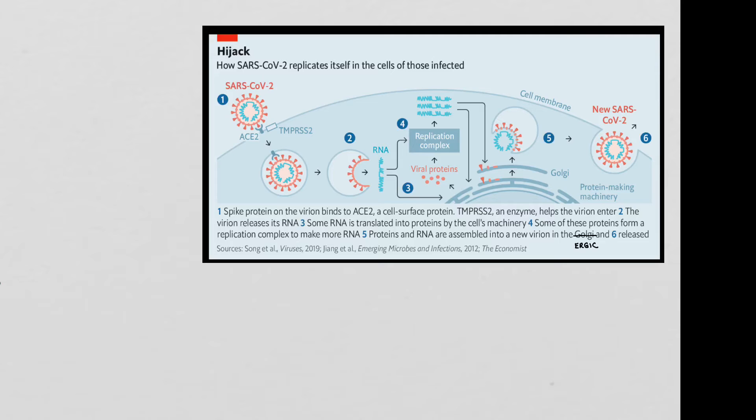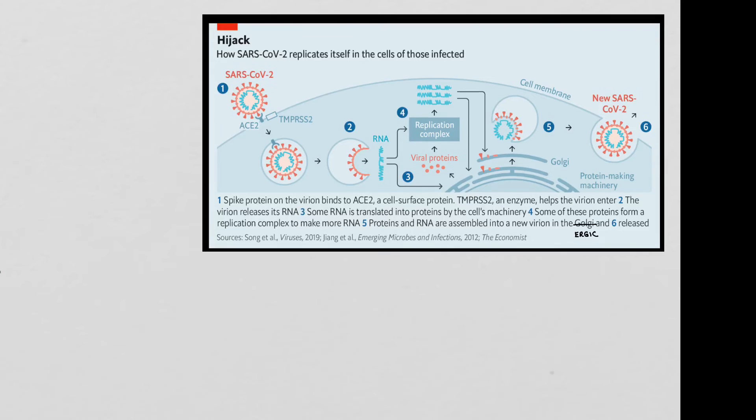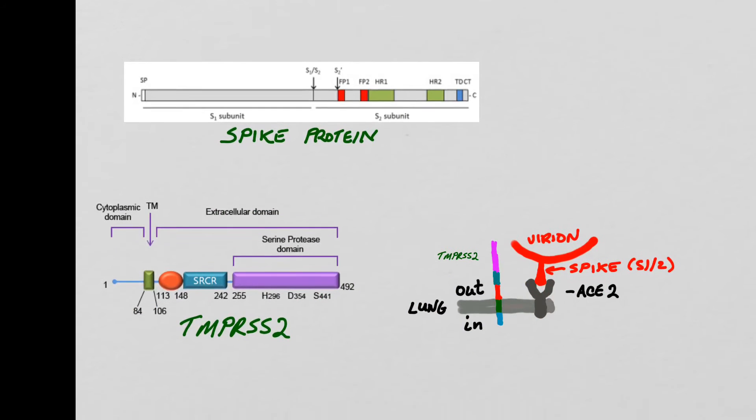These are some schematic diagrams of the spike protein, that serine protease, and then the early stages of the infection process. Spike protein is a virus envelope protein, yes, but it is synthesized in the cytoplasm of the lung cells. So everything that we talked about on Thursday can be applied directly to this protein, including the presence of a very orthodox signal sequence right here.